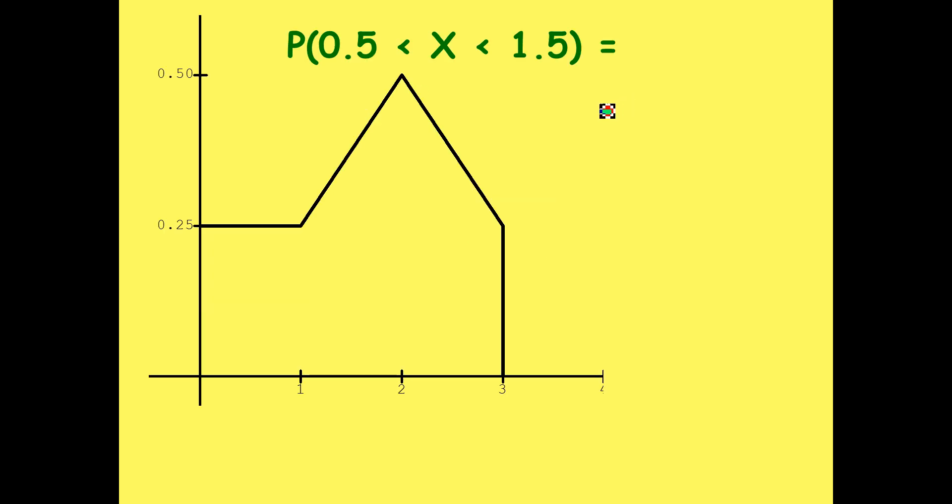So, let's try a harder example now. Let's say we want to find the probability of the random variable having a value of anywhere from 0.5 to 1.5. And I've highlighted that area, 0.5 to 1.5. Now, we see this isn't a very easy shape to find the area of, so we're going to split it up.